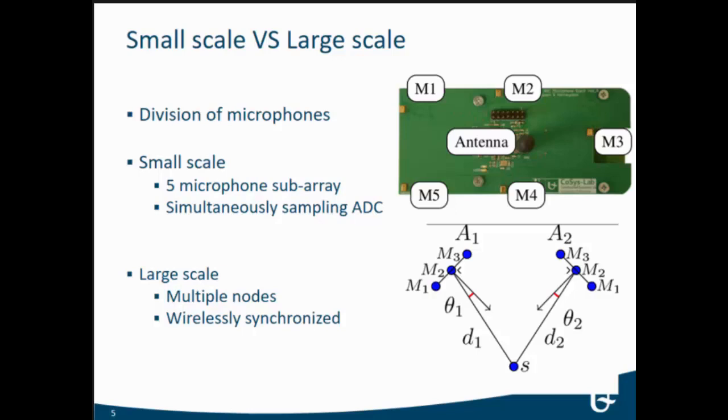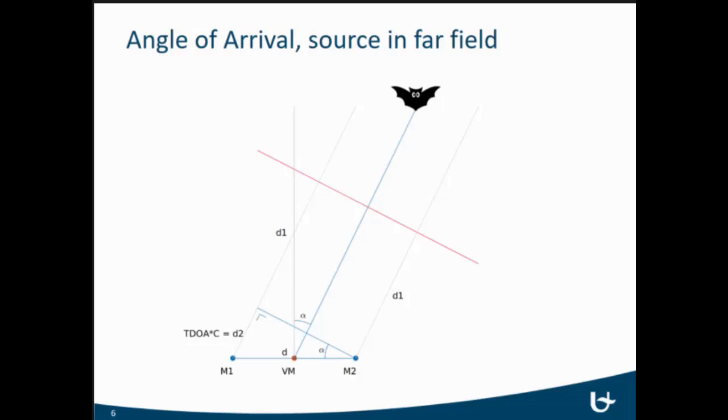Just to give a brief introduction—what time difference of arrival or angle of arrival could mean. At the bottom, we have two microphones at a set distance apart. We assume the sound is in the far field, so we can make a flat wave assumption. The sound arrives. We don't know anything about the distance of the sound because the emission time is unknown to us. But when the sound arrives at microphone 2, we can then calculate the extra time or the time difference it takes for the sound to arrive at microphone 1.